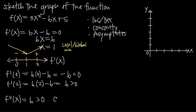Because the second derivative is always positive, the function is going to be concave up everywhere in its domain. If we had gotten a negative value, we could say the function is concave down everywhere. If a variable had remained, we would have set the second derivative equal to 0, solved for x to get potential inflection points, and used the second derivative test to verify. But here, we can say the function is concave up everywhere.